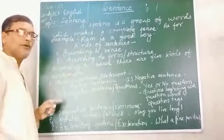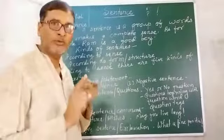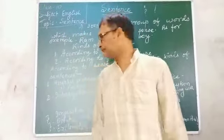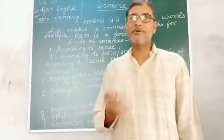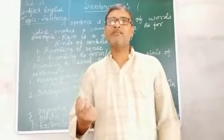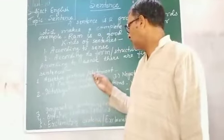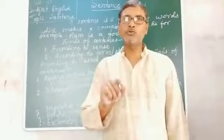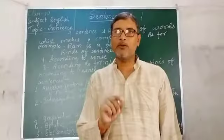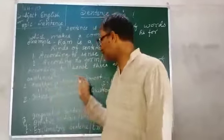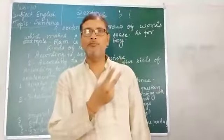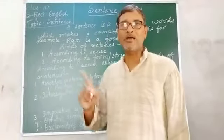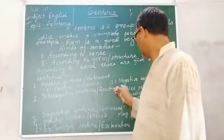The first kind of sentence is the assertive sentence, which is also called a statement or declarative sentence. An assertive sentence is a very simple sentence which has a simple meaning. It is also called a statement. For example: Ram goes to school every day. There are two kinds of assertive sentence: positive, also known as affirmative, and negative.